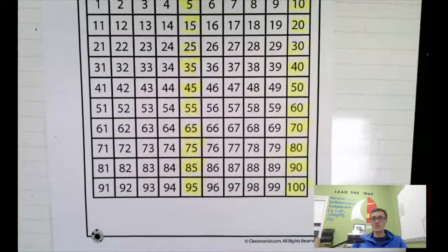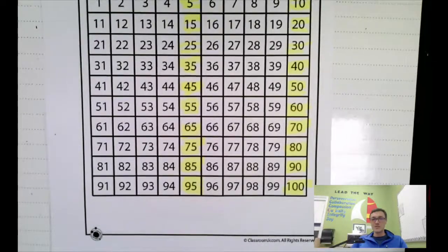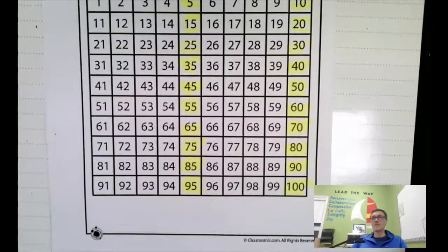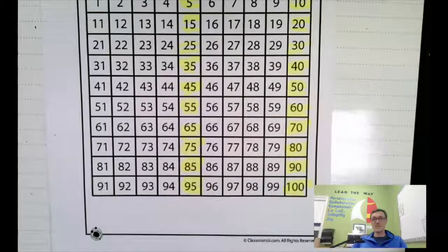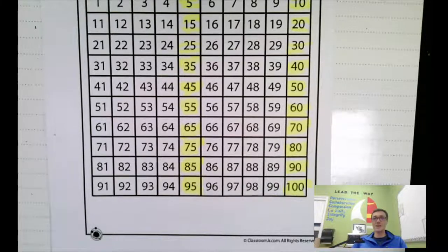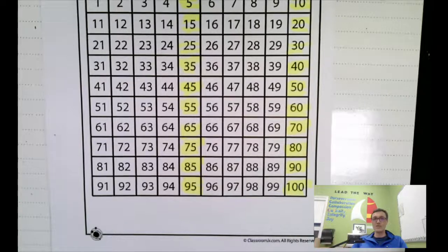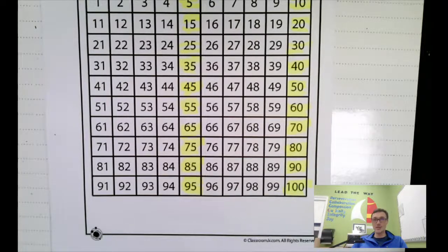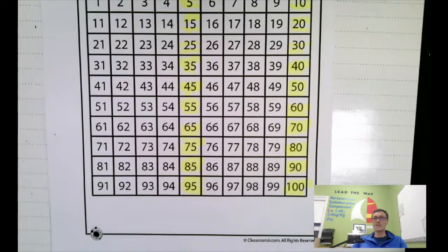Let's go backwards. 100, 95, 90, 85, 80, 75, 70, 65, 60, 55, 50, 45, 40, 35, 30, 25, 20.